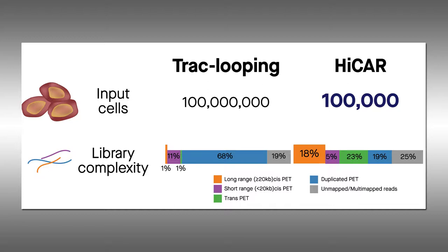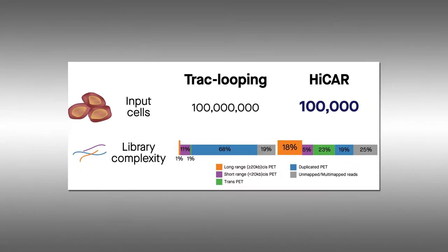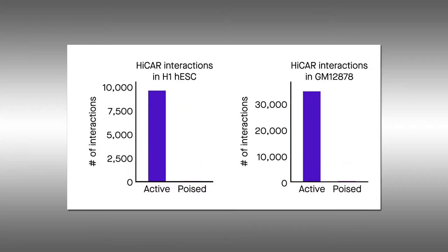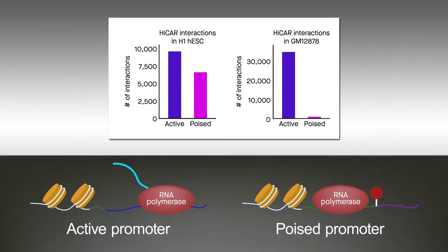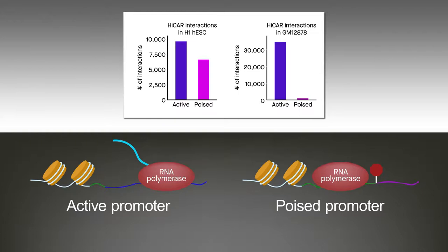In addition to being simpler and more cost-effective than existing methods, HICAR also detects the presence of so-called poised gene promoters, which do not immediately drive gene expression. Interestingly, these poised promoters can function as silencer-like elements over long genomic distances to repress distal genes through long-range chromatin looping between promoters.